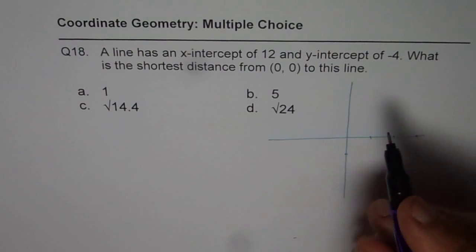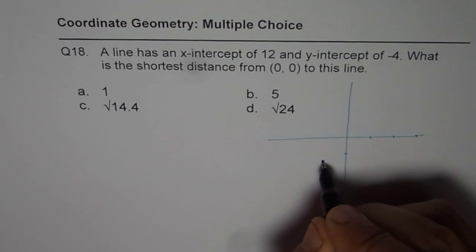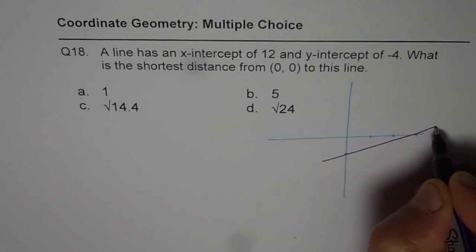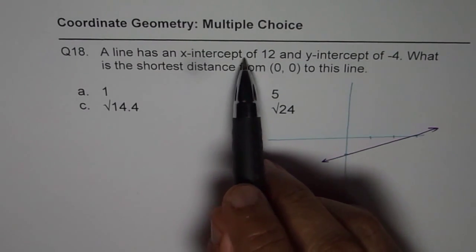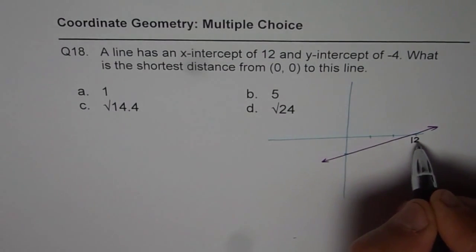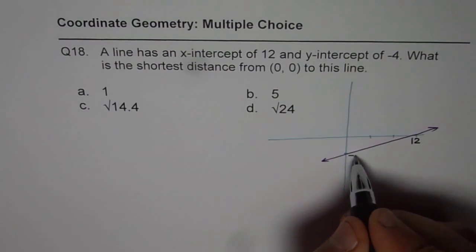We can join these points and that will give us the line. So this line is given to us where x-intercept is 12 and y-intercept is minus 4.